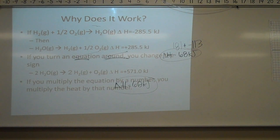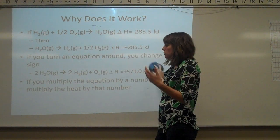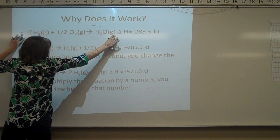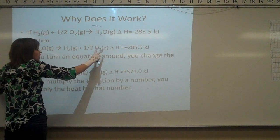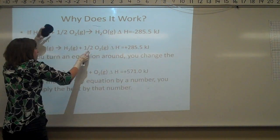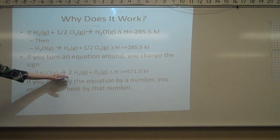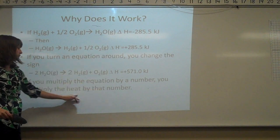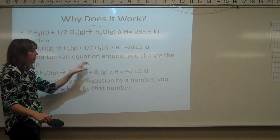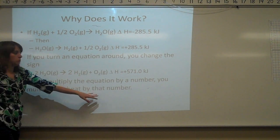Here's another concept: if you take H2 plus oxygen making gaseous water vapor, and then reverse it — taking vapor water to make hydrogen gas and oxygen gas — your enthalpies change their signs because the equations are flipped. Also, if you double an equation — going from one H2O to two H2Os, one H2 to two H2s, and half O2 to one O2 — you must also double the enthalpy value. Multiply the equation by a number, you multiply the heat by that same number.